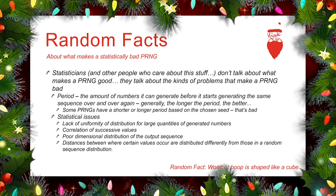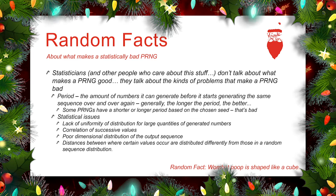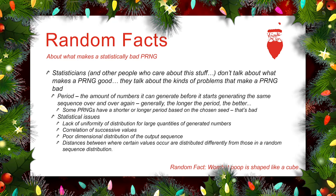Most of the time, statisticians and people who care about this kind of stuff will not talk about what makes a pseudo-random number generator good. They'll talk about the kinds of problems that make a pseudo-random number generator bad. One of the biggest ones is something called the period of the pseudo-random number generator — that's the amount of numbers the algorithm can generate before it begins generating the same sequence over and over again.